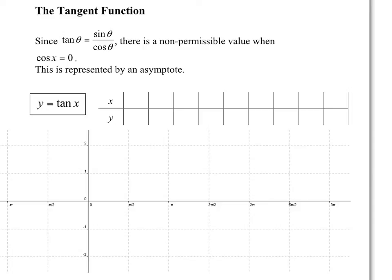I'm even going to add a point here. So let's go with 0, and then I'm going to go to the pi over 4 values too: pi over 4, pi over 2, 3 pi over 4, pi, 5 pi over 4, 3 pi over 2, 7 pi over 4, and 2 pi.